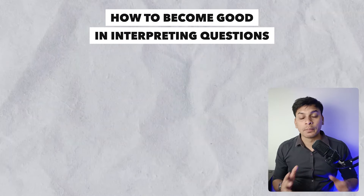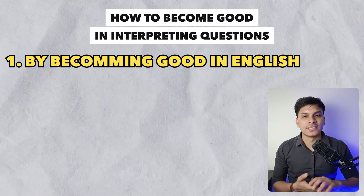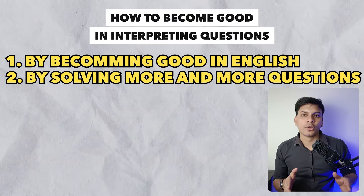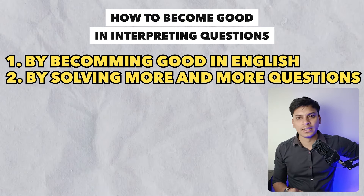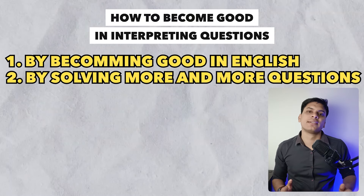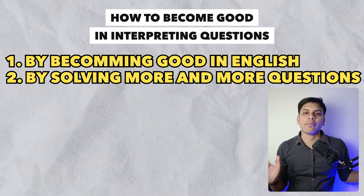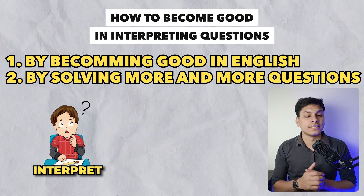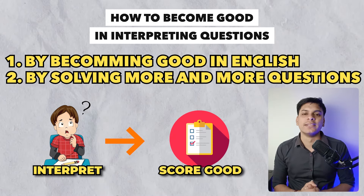Kaisa vano ga aap better in interpreting questions? First thing, by becoming good in English. And second thing, by solving more and more questions. Agar aapne sau taray ke questions solve kar liye, jisme bilkul alag alag tarikay se cheize puchhi gayi thi, toh 101 taray ka koi question hai hi nahi. Aap kis-kis taray ke questions puchhe jaate hai samajh jaoge, ek varied type of questions ko solve kar loge, toh aap interpret karna achhi taray se sikh jaoge, and you will be able to score good in CR.